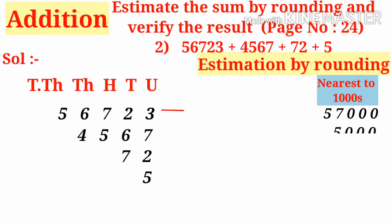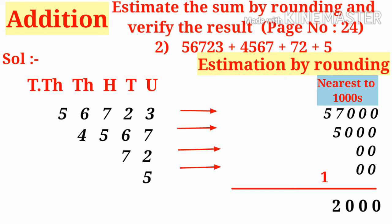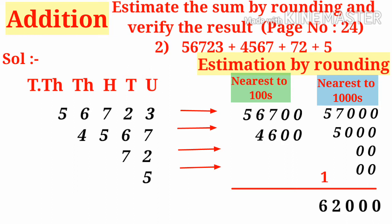Estimating by rounding to the nearest thousand: the five-digit number rounds to 57000, the four-digit number rounds to 5000, the two-digit and one-digit numbers both become zero. Adding these, in the units, tens, and hundreds places we get zero. In the thousands place, 7 plus 5 is 12, so 2 is placed in the thousands place and 1 is carried to the ten-thousands place. 5 plus 1 becomes 6, giving a total of 62000.